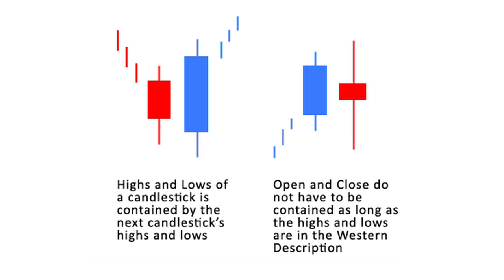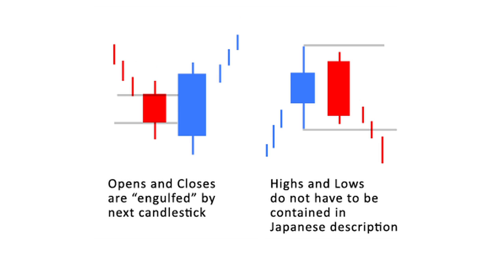There are two rudimentary patterns that play out over at least two candlesticks. An outside bar is a bar with a higher high and a lower low than the previous candlestick, often with a body that also encompasses the price range of the previous bar's body. A variation is the engulfing bar, which just has a higher open and a higher close, regardless of the relative size of the wicks.